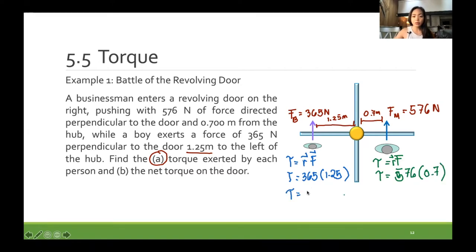The torque of the boy is equal to 456.25 newton meter. And the torque of the man is 403.20 newton meter.